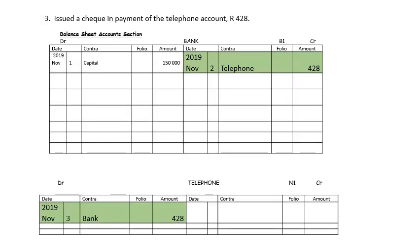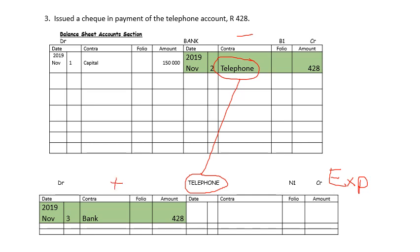The next transaction: we issued a cheque in payment of the telephone account. We are spending money. Where is the money coming from? From bank. Bank being an asset will decrease on the credit side. You are paying the telephone account, which means that telephone will be your other account concerned. Telephone is an expense. Expenses increase on the debit side, decrease on the credit side. So in the telephone account, on the 3rd, money comes from the bank — bank is the name of the other account — and the amount is $428,000.